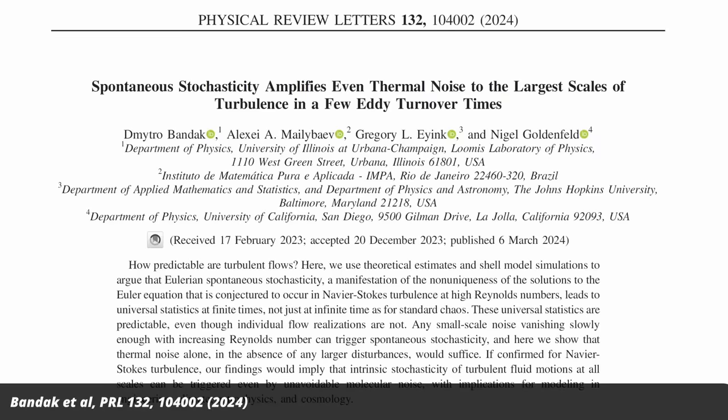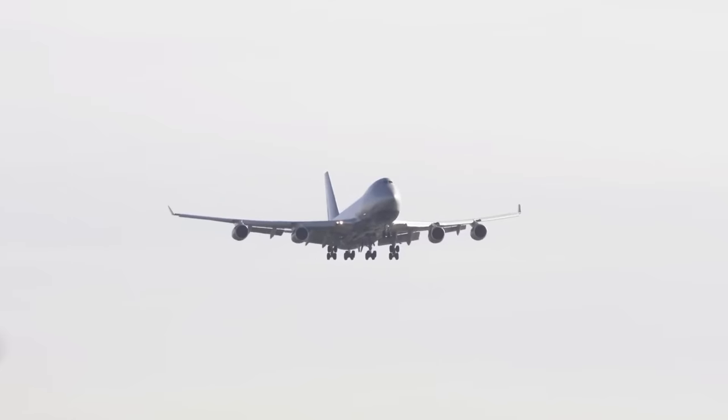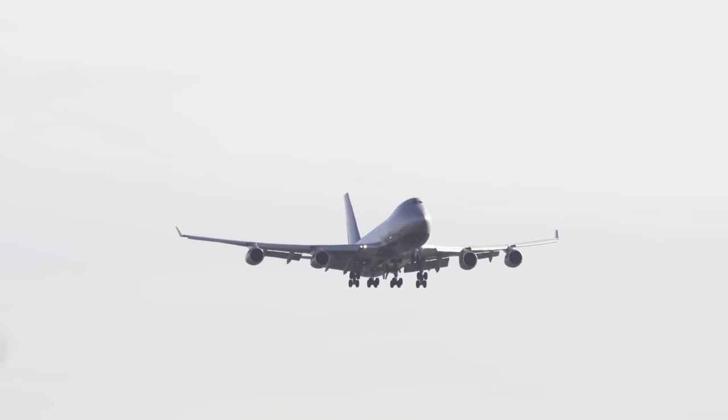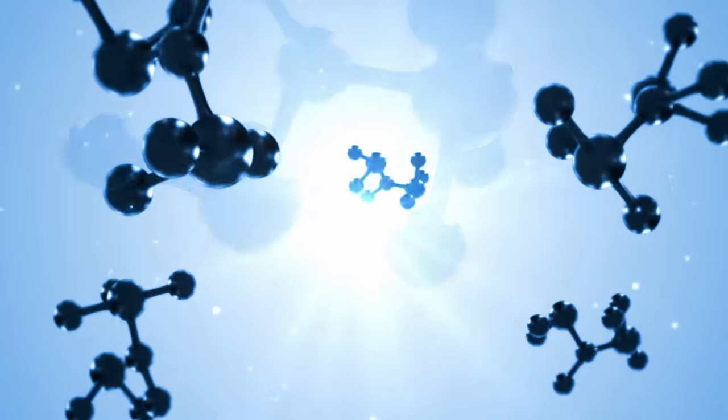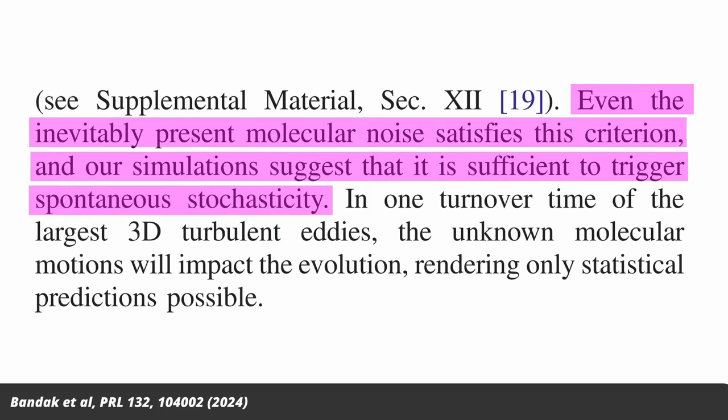Unfortunately, Benedict Jacker beat me to writing a novel about this, so rather than writing novels, I'm here on YouTube talking about papers that got recently published in PRL. The new paper looked at the question of just how small a disturbance can be to influence larger scales. Is a butterfly large enough? Do you need an elephant flapping its ears? Maybe a jumbo jet? They find, amazingly and rather concerningly, that even the motion of molecules is enough to trigger turbulence all over the place. Their computer simulation suggests that even the inevitably present molecular noise is sufficient to trigger spontaneous stochasticity.